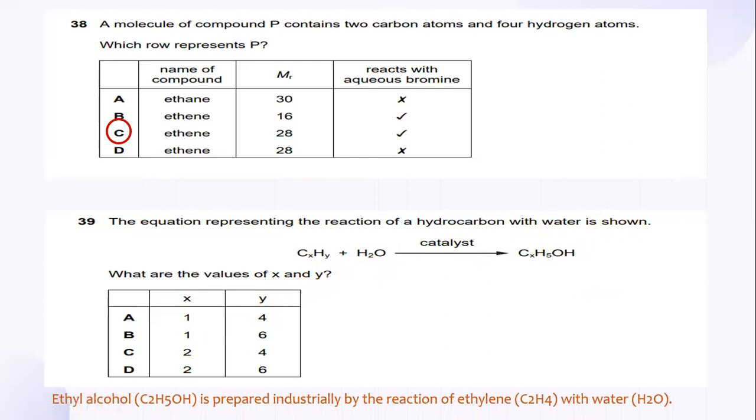Ethyl alcohol is C2H5OH and is prepared industrially by the reaction of ethylene C2H4 with water. So, the answer for this is C.